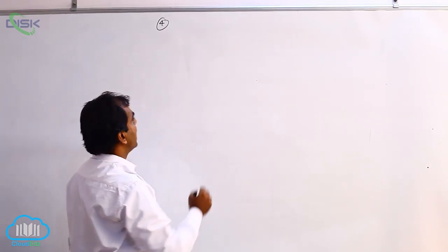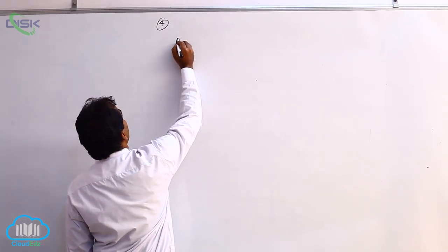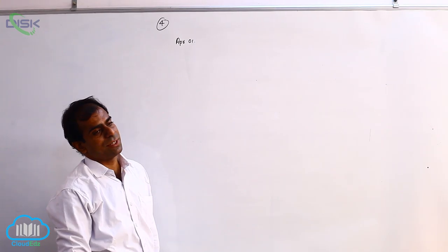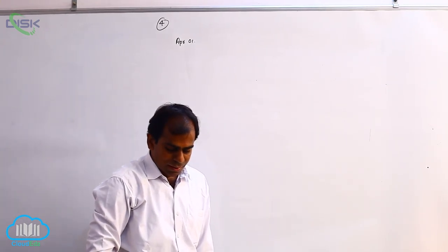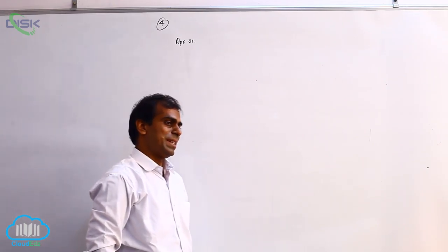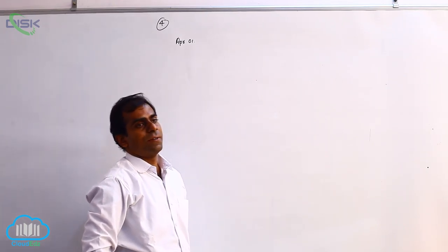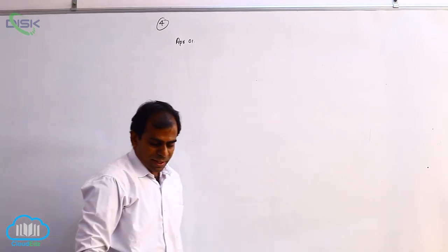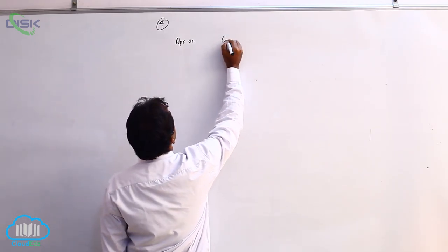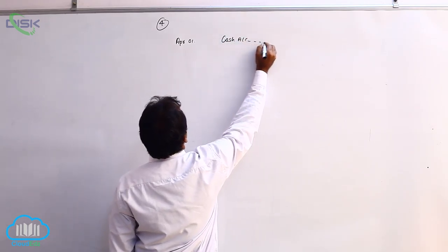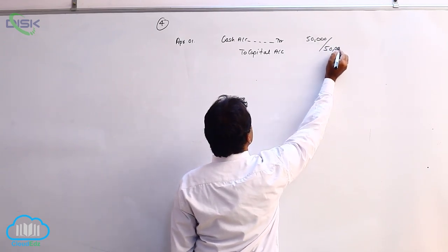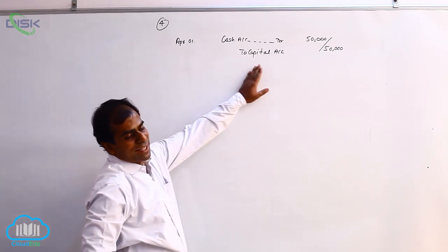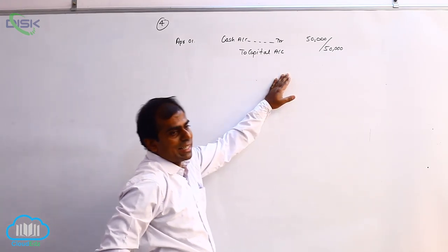The fifth problem: on April 1st, it is stated that Dinesh started business. When nothing is stated, the business is started with cash — the business is getting cash from the owner, whose name is Dinesh. Whenever the owner comes into the picture, we refer to it as capital. The journal entry is: cash account debit to capital account, the amount being 50,000.